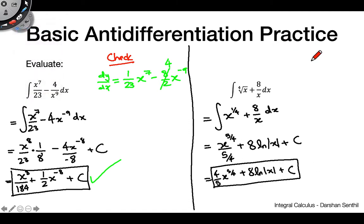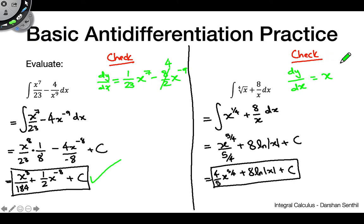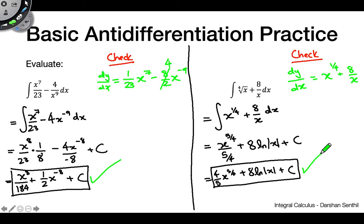Let's check this by finding dy/dx. Using the power rule: 5/4 and 4/5 are reciprocals, so they cancel, leaving x^(1/4). For the ln|x| term, when taking the derivative we just treat it like regular natural log, giving 8/x. The derivative of c is zero. This matches what we have, so our answer is correct.